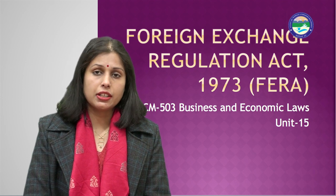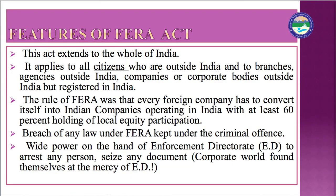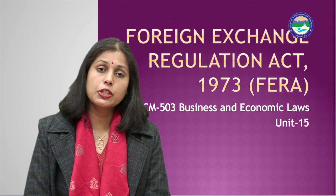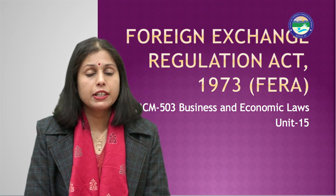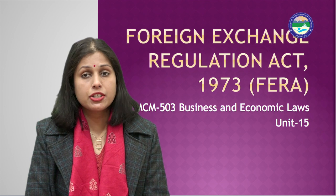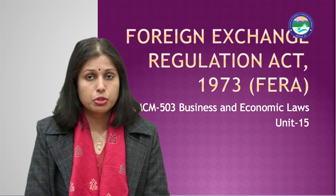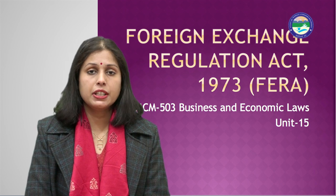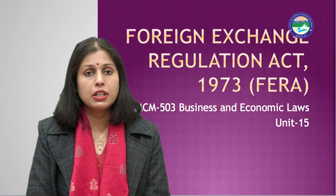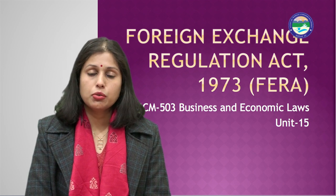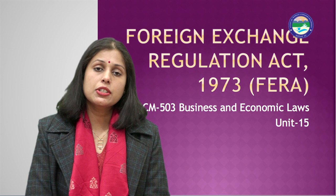The Enforcement Directorate (ED) had wide powers to arrest any person and seize any document. Anyone found guilty of violating FERA or against whom charges were filed could be arrested by the ED. The ED had the power to investigate, and the corporate world found itself at the mercy of the ED. This is why FERA was also called a draconian act.